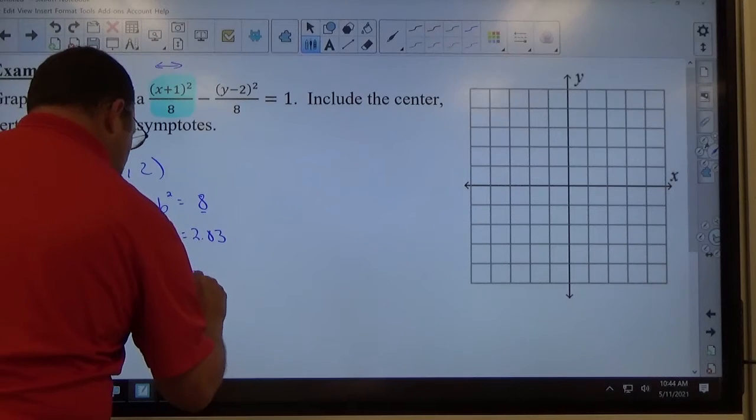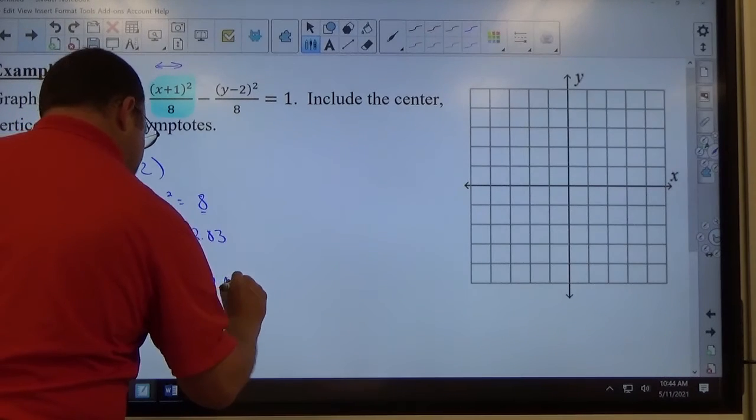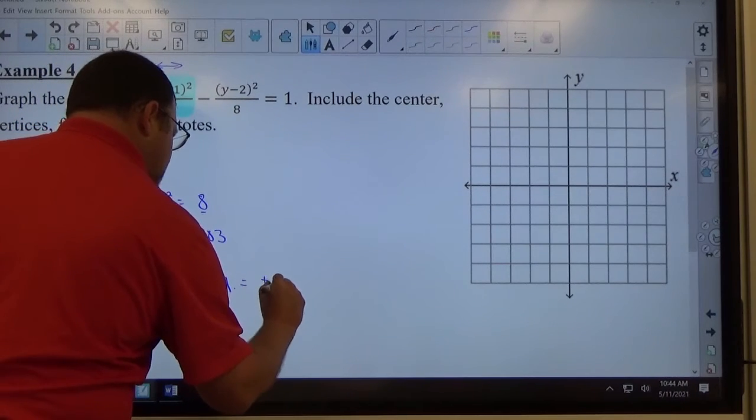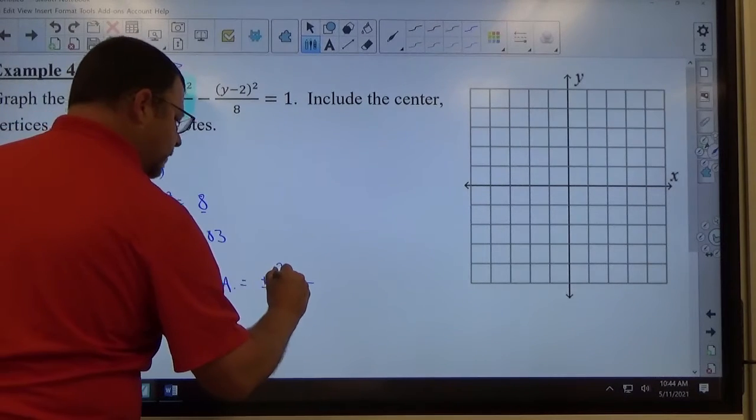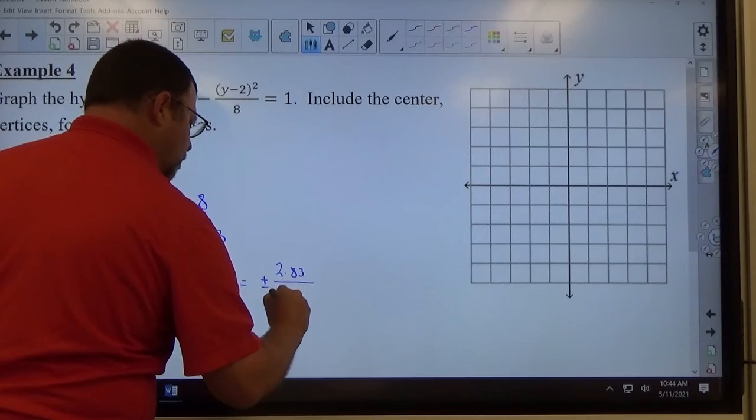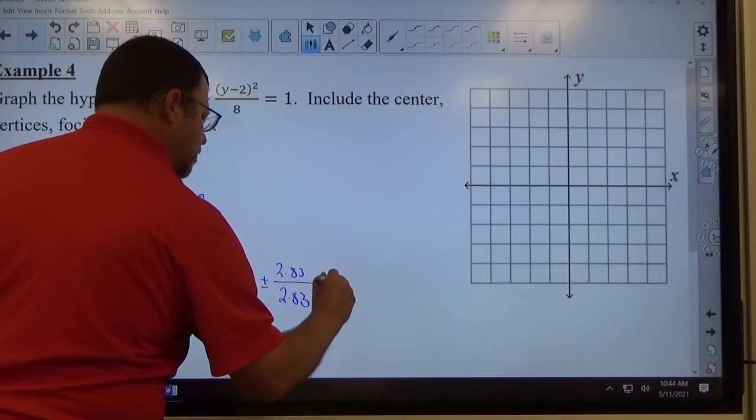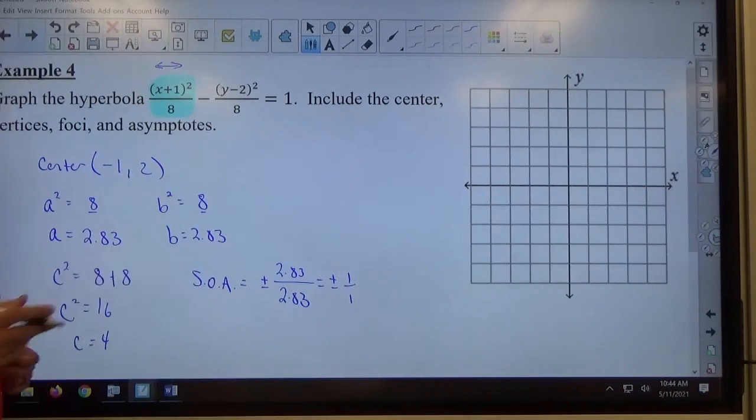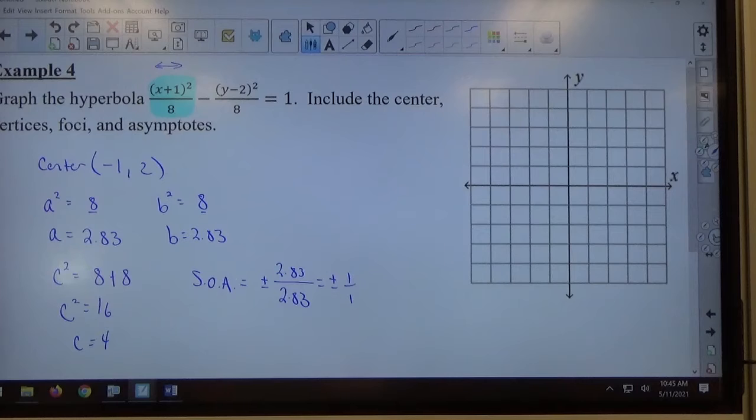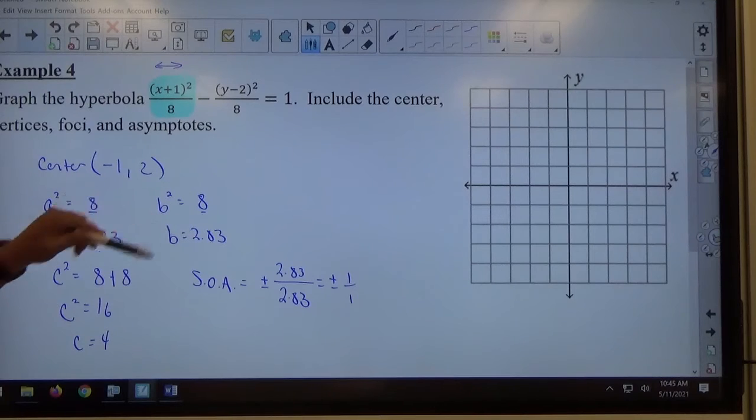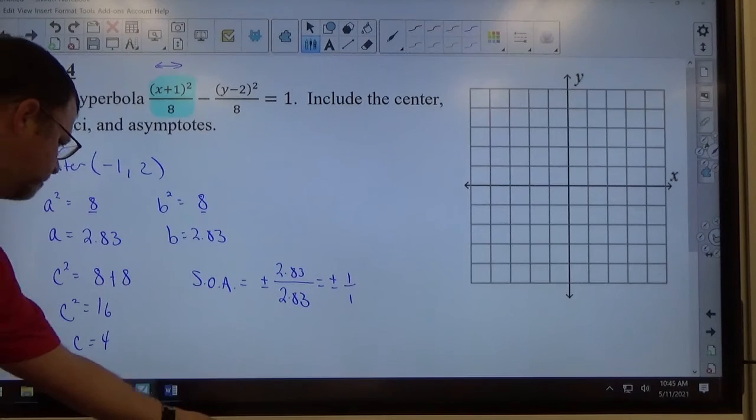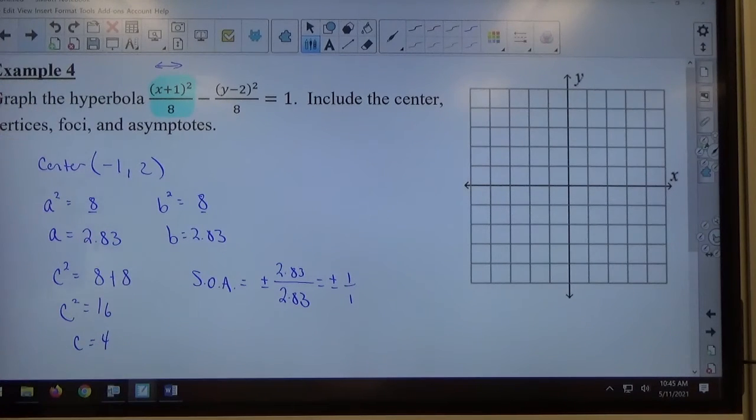And the final thing I need to know is my slope of asymptotes. It's plus or minus b over a. Well, b is 2.83, a is also 2.83. That's equal to plus or minus 1 over 1. You can leave it 2.83 over 2.83 as well, it doesn't matter. 1 over 1 is just as good. The other problem of 2 over 2.24 wasn't easily reduced to some friendly number, but 1 over 1 is pretty easy to deal with.